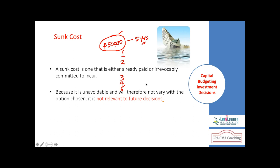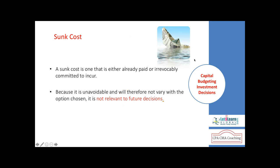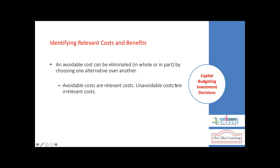In investment decisions we need to understand certain terms: sunk cost, opportunity cost, and whether cash flows remain the same over a period or are fluctuating. Sunk cost is the cost incurred in the past. For example, if you acquired intangible asset rights for fifty thousand dollars for five years, that fifty thousand dollars is a sunk cost. Similarly, if you purchased a delivery van for fifty thousand dollars with an effective life of five years, depreciation is a sunk cost as the cash flow already took place in year one.